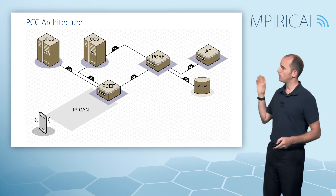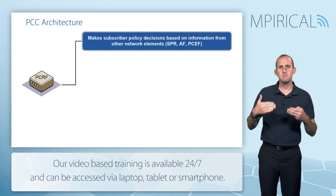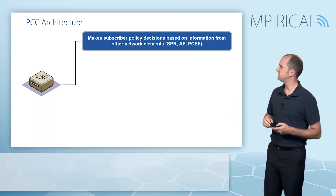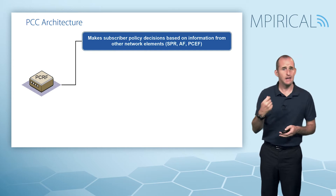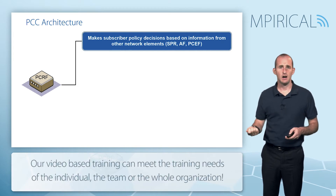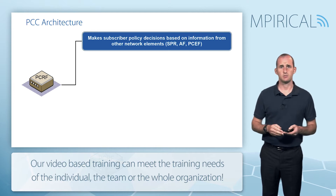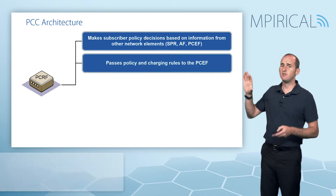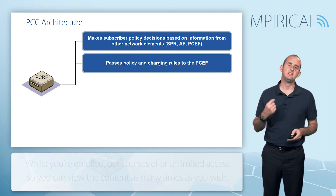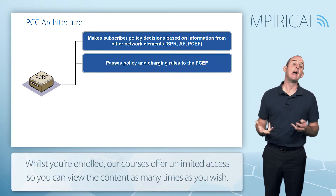As we move into the network, we'll pick up on the PCRF first of all. We know that the PCRF is the main decision maker in the PCC architecture. Policy decisions are made based on information from a variety of different devices in the network — it could be the SPR, it could even be the PCEF or an application function of some description. The PCRF passes those rules to the PCEF for enforcement as a Diameter message over the Gx interface.